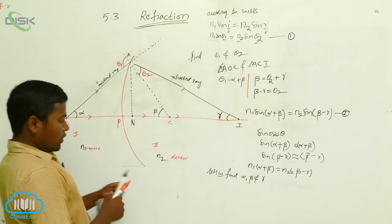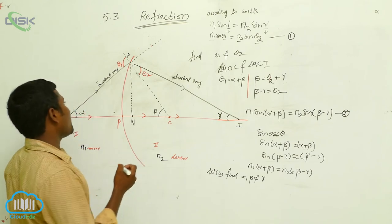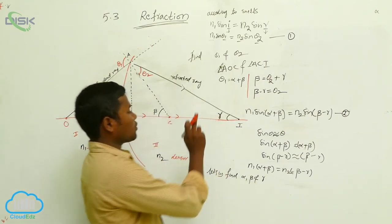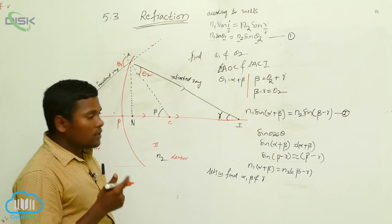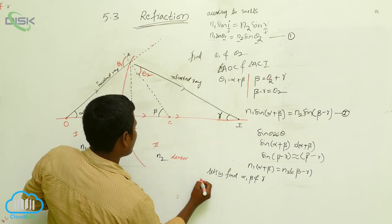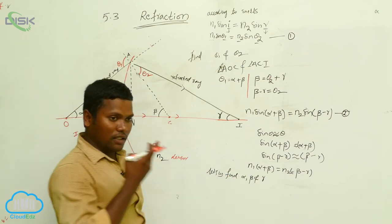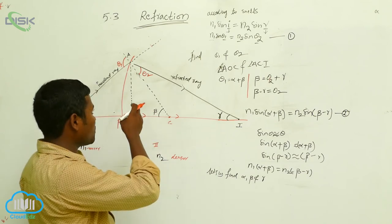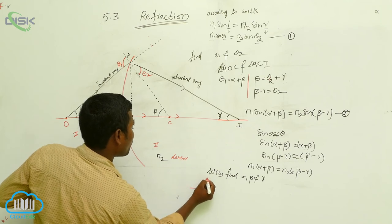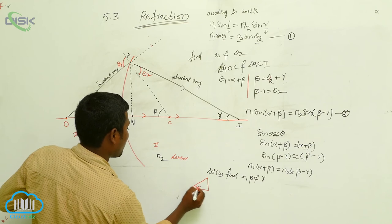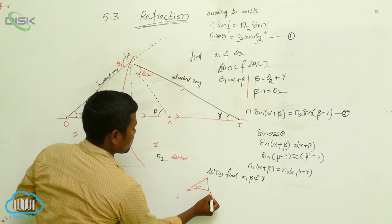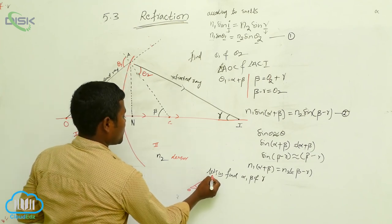First, if you want to get the alpha value, you need to choose the appropriate triangle from the diagram. Alpha is at this point, beta is at this point, and gamma is at this point. There are three triangles corresponding to three unknown parameters α, β, and γ. For alpha, we consider the triangle at point O. A normal line is drawn, and the first triangle involves points O, N, and A.